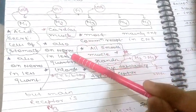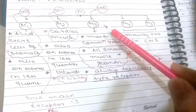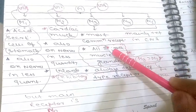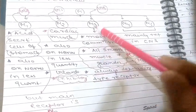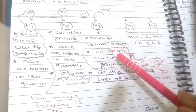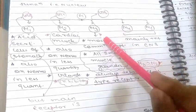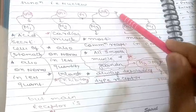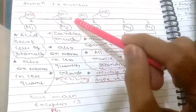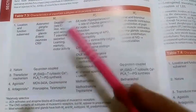The main receptor on acid-secreting cells of the stomach is M3. M2 is mainly present on cardiac muscle and also on nerves in lesser quantity. M3 is the most common receptor, present on all smooth muscle and gonads, and functions through Gq. M2 functions through Gi (G inhibitory).